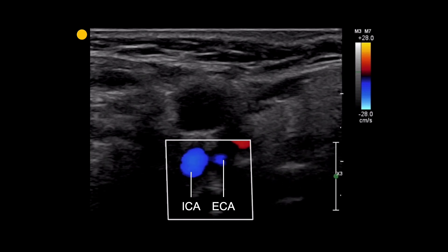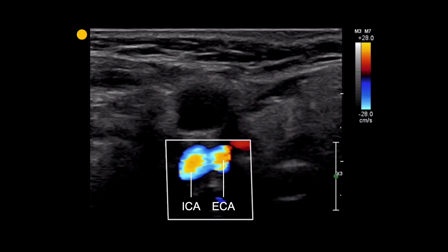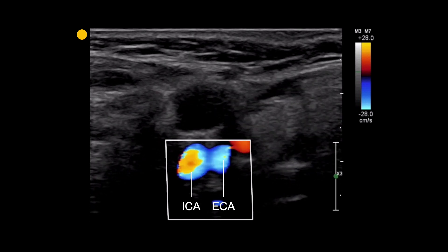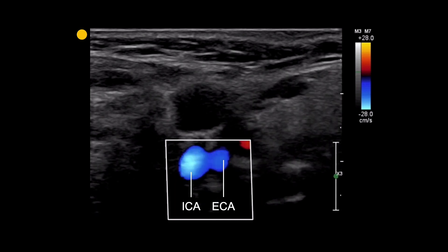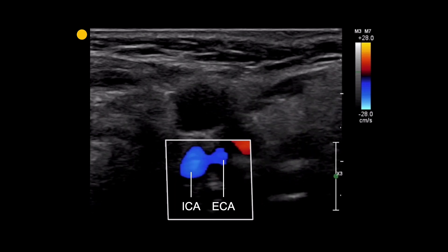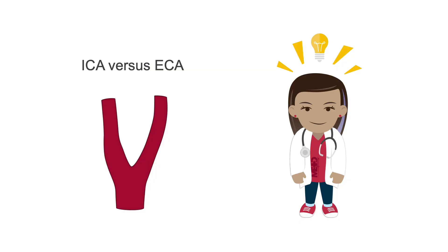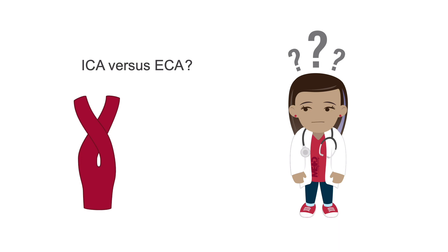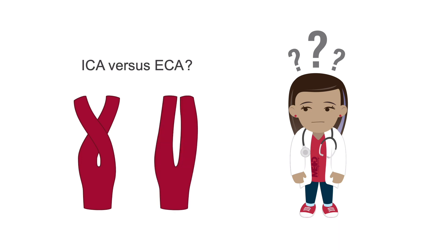It is important to note that this video has been slowed down to more clearly show these differences — it will appear about twice as fast when assessing a patient. Remembering these key differences will help you clearly identify the ICA and ECA in most cases, but sometimes distinguishing between these two arteries is more difficult, because the orientation of the vessel may be different, or the arteries might be very close together, with minimal difference in the size or flow patterns.